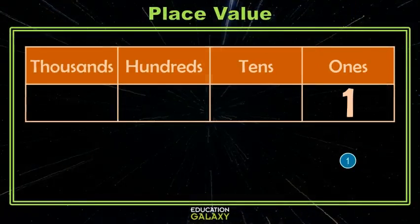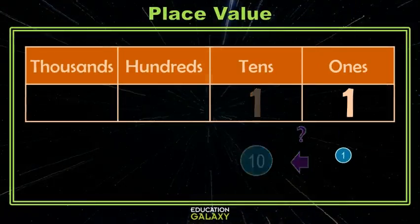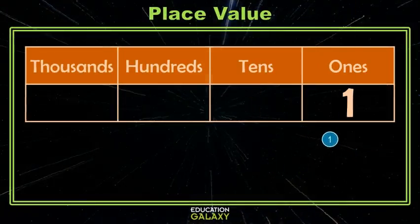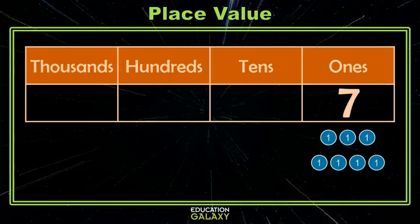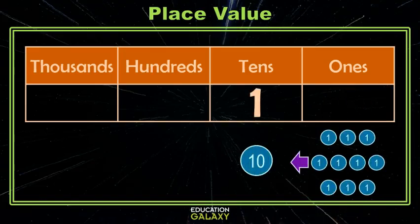So let's say I have 1, and I ask you, how do I get from 1 to 10? Well, we know that as we increase this 1, eventually I'm going to get to 10 and it's not going to fit in the ones place anymore — it becomes 10. So how does 1 relate to 10? Well, I needed 10 of them. 10 is 10 times 1.